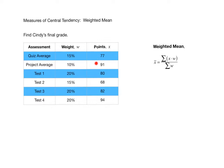These are the grades that she got out of 100. She got a 77 quiz average, a 91 project average, an 80 on test one, a 68 on test two, an 82 on test three, and a 94 on test four.